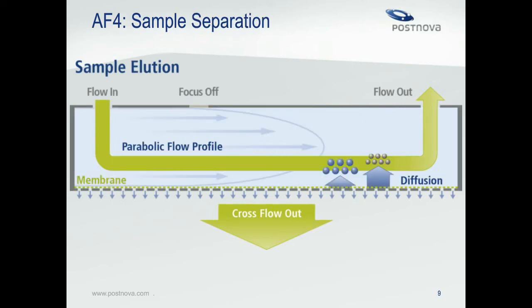After the focusing step, the focus pump is turned off and elution begins. The tip pump provides a channel flow which pushes particles down the channel, and the FFF module continues to pump eluent across the membrane to maintain the cross flow. Smaller particles diffuse more readily into the faster flow profiles, resulting in earlier elution than larger particles, and therefore size separation occurs.